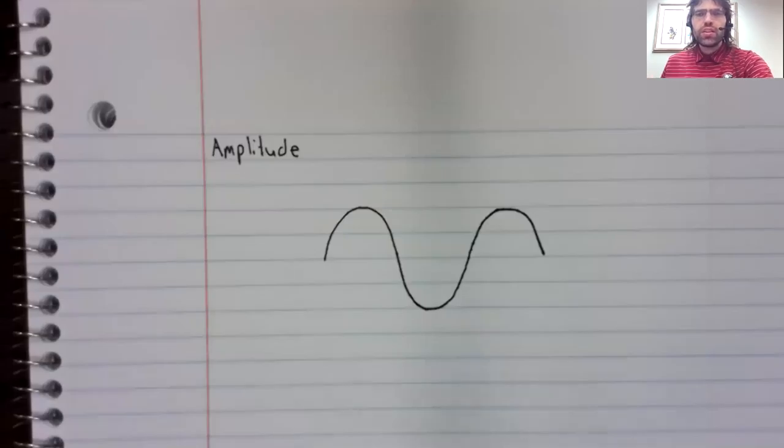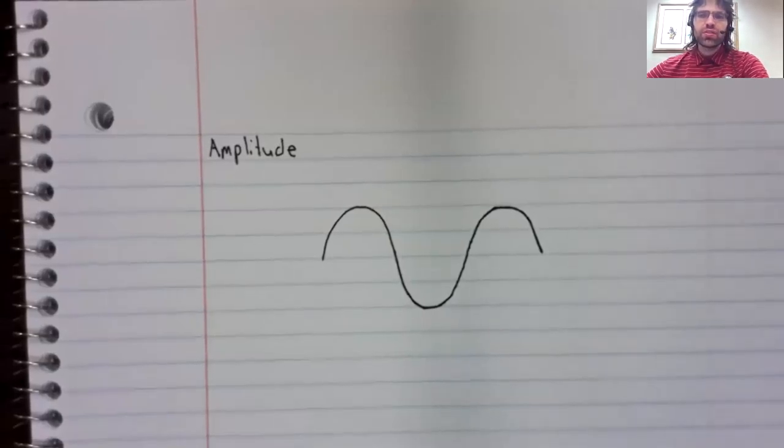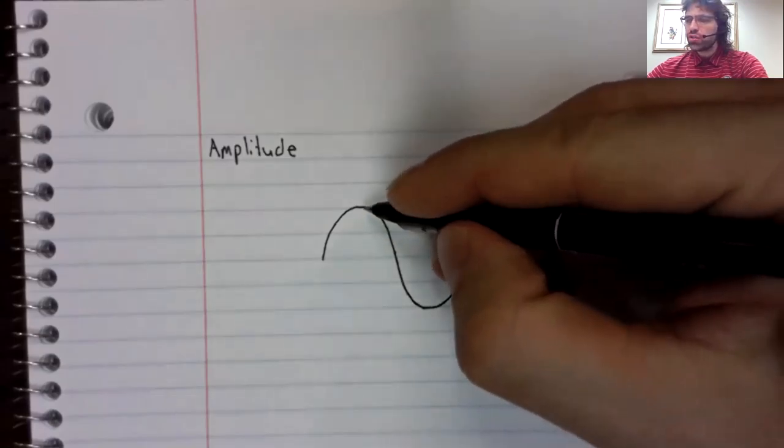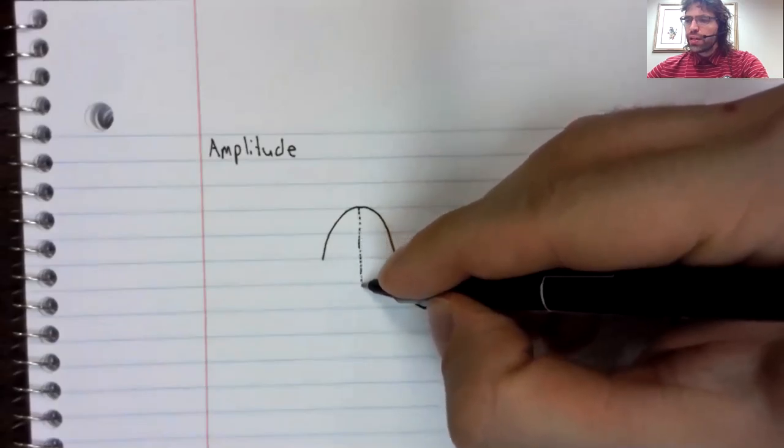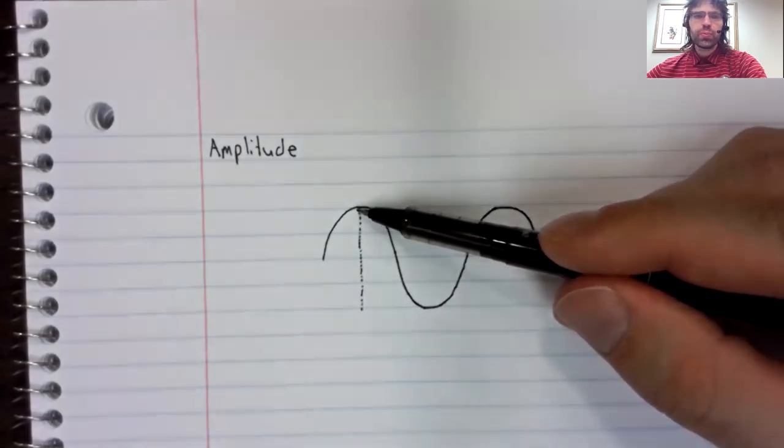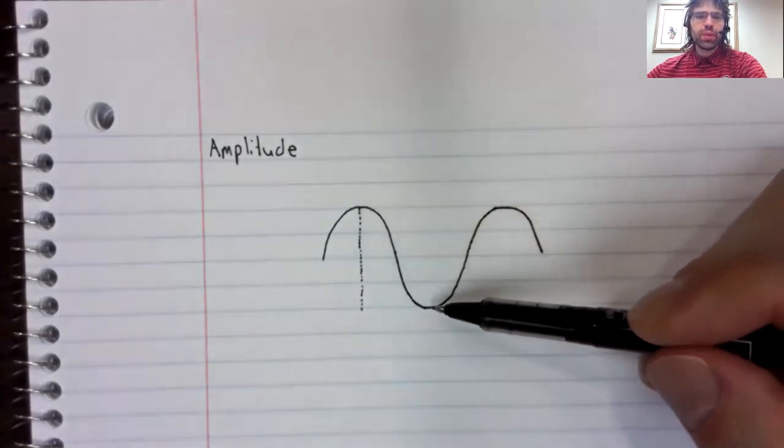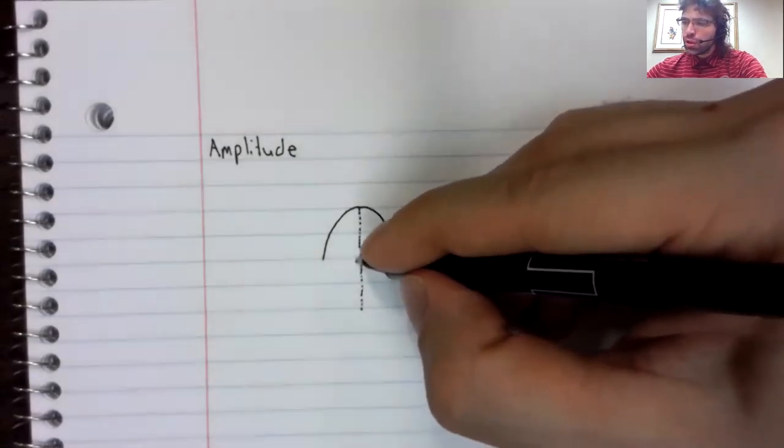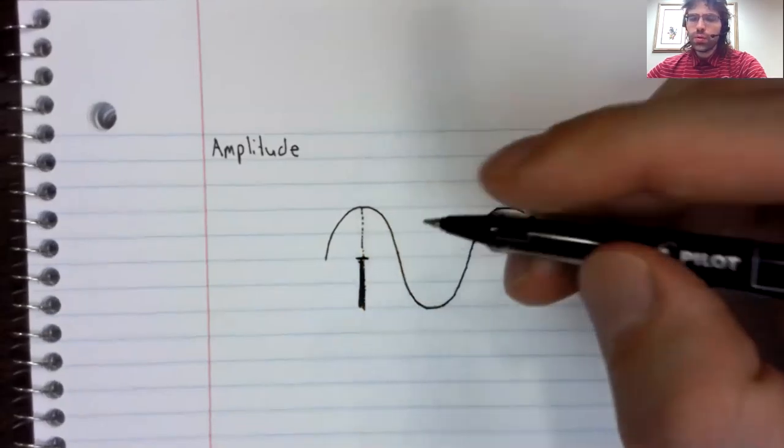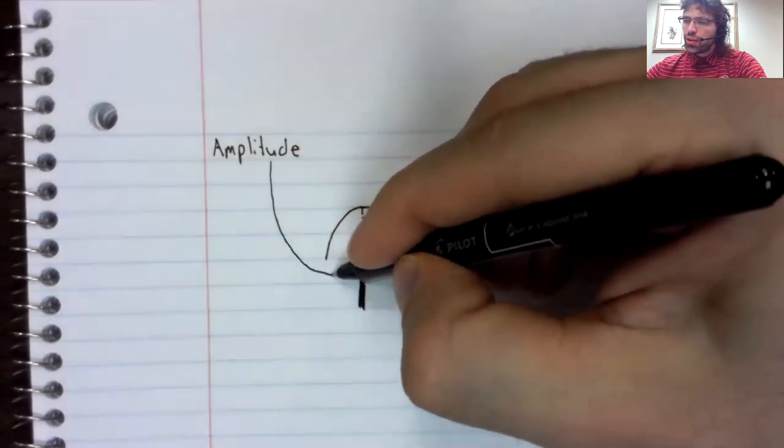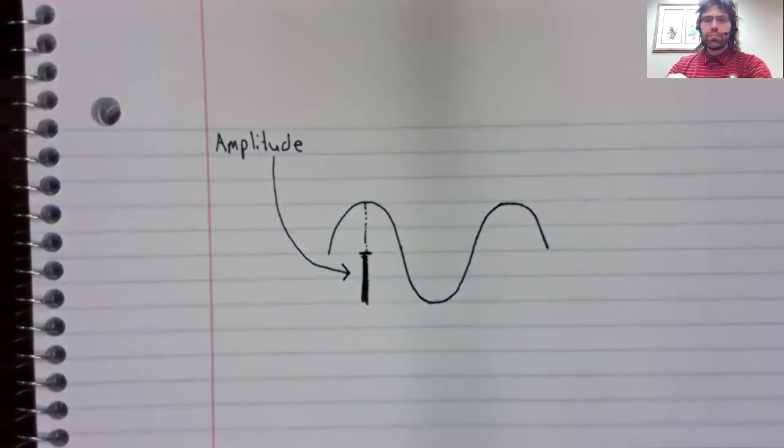Let's start by looking at the amplitude of a sinusoidal function. We've seen this word in the context of the sine and the cosine function specifically, and it's defined the same way here. You look at the difference between the maximum value and the minimum value, and you cut that distance in two. And that is the amplitude.